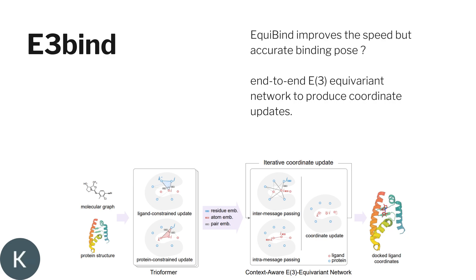There is another method called U3BIND, which I can say is a further improvement of UQBIND. UQBIND improves speed but the accuracy is still a concern. U3BIND, as the name suggests, is an end-to-end equivariant network that produces coordinate updates. It generates graphs based on the small molecule and protein structure, then iteratively updates the coordinates to predict the docked ligand coordinates.